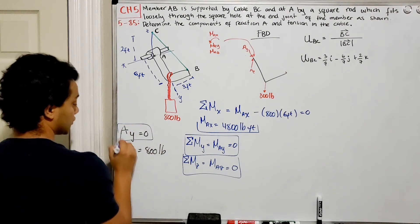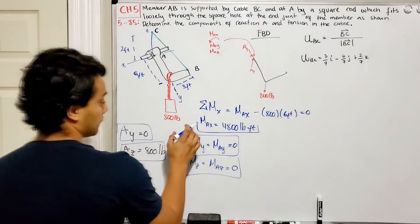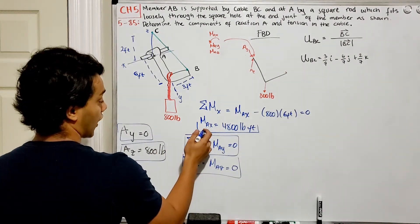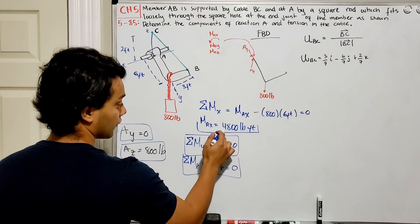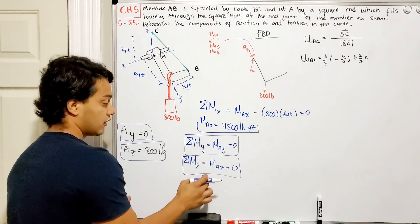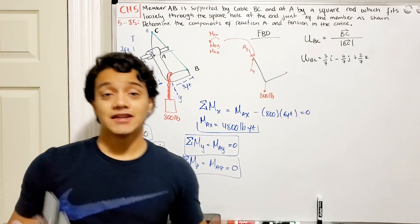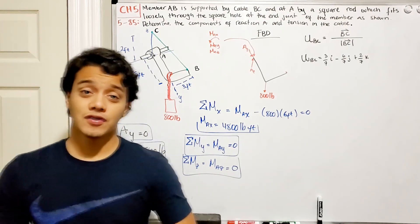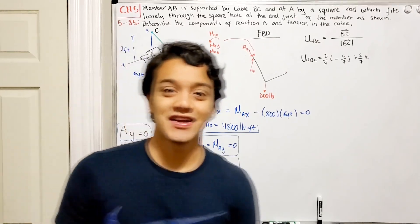To summarize: Ay equals zero, Az equals 800 pounds, the moment reaction with respect to the x-axis is 4800 pound-feet, and the moment reactions MAy and MAz are both equal to zero. Thank you guys for watching. If you have any questions or comments, please post them below, and see you in the next video.